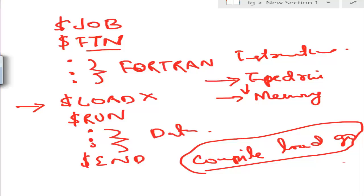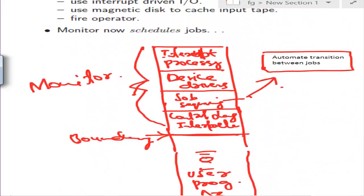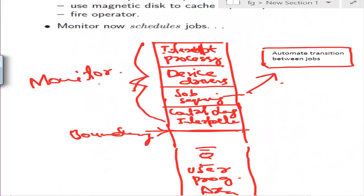Now our monitor is controlling things beautifully — it is scheduling, doing all the things. It has device drivers to interact with tape drives and memory. It does job sequencing: when a job is finished, control goes back to the monitor, the monitor loads the next job, and so on. You don't need a human operator — job scheduling is automated. The CPU is kept reasonably busy, though we could still do much better.